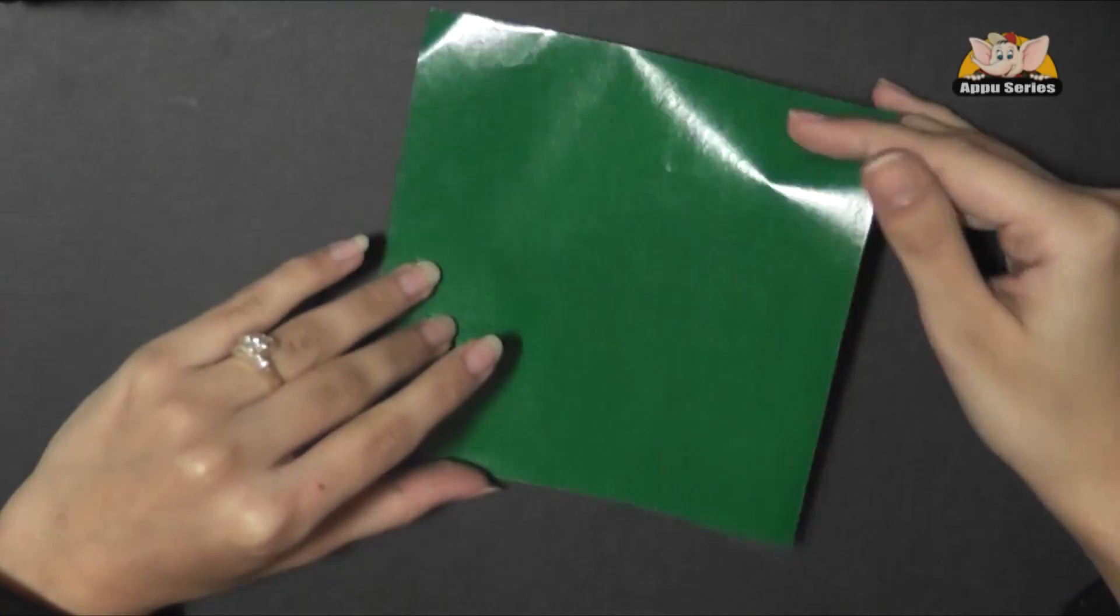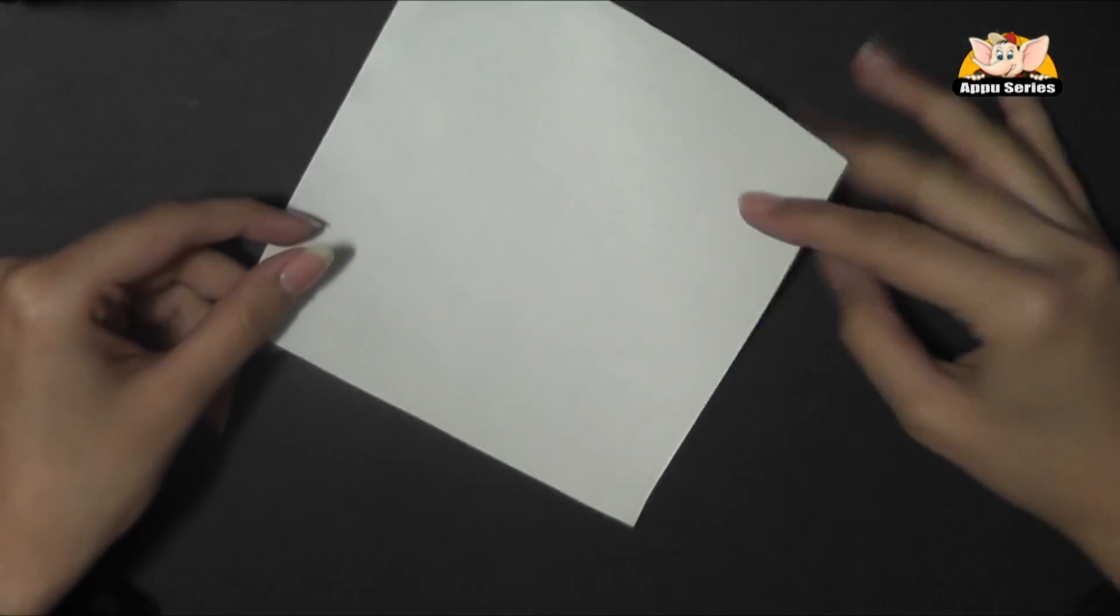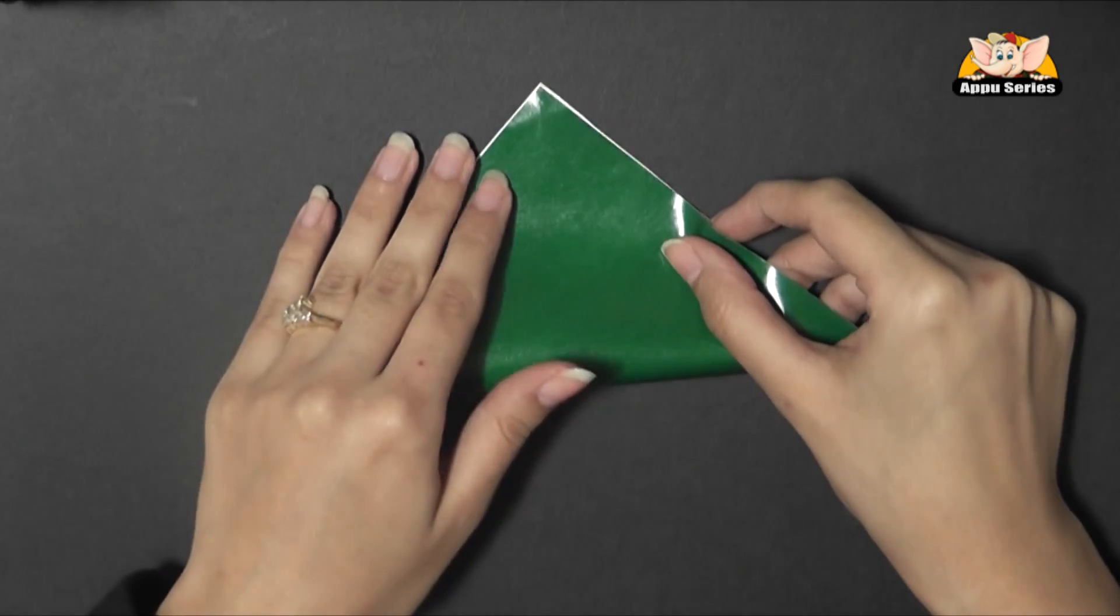Hi, today I will be teaching you how to make a poinsettia flower out of paper. We will start with a square piece of paper. We will take the color green for the leaves.